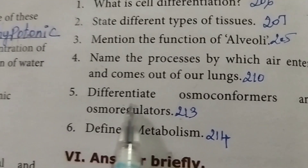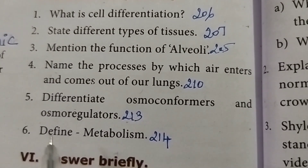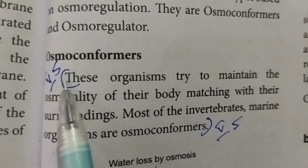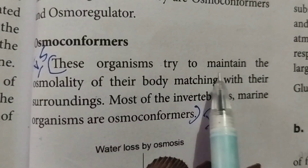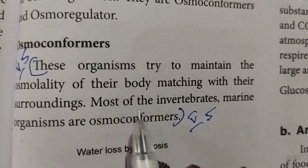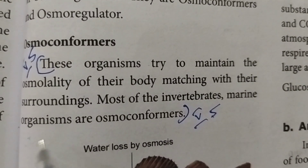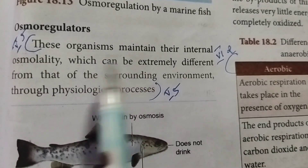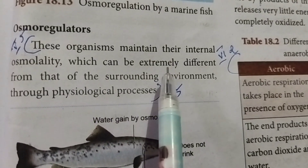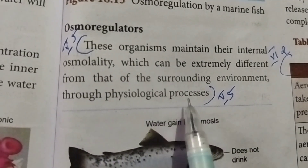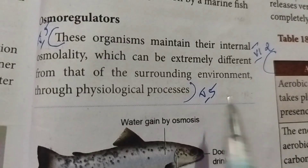Fifth: differentiate osmoconformers and osmoregulators. Osmoconformers: these organisms try to maintain the osmolality of their body matching with their surroundings; most invertebrates and marine organisms are osmoconformers. Osmoregulators: these organisms maintain their internal osmolality, which can be extremely different from that of the surrounding environment, through physiological processes.